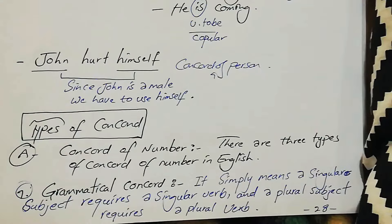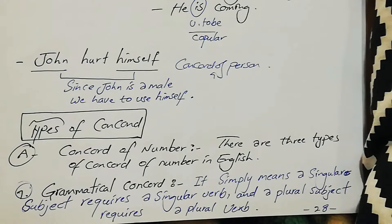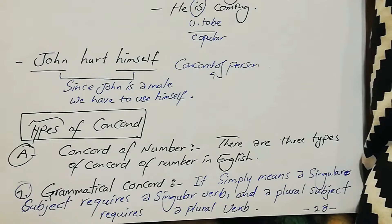Concord types — types of concord. Concord of number: there are three types of concord of number in English. The first type is grammatical concord. It simply means a singular subject requires a singular verb, and a plural subject requires a plural verb, just like the previous example 'He comes.' Since the subject is singular, we have to add a third person singular 's' to the verb in order to have agreement between them.